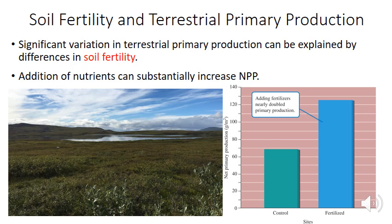Beyond temperature and moisture, nutrient availability or soil fertility has the biggest influence on terrestrial primary productivity. This was shown by Shaver and Chapin in 1986, who added fertilizer — nitrogen, phosphorus, and potassium — to plots in the Arctic tundra. Those fertilized plots showed an almost 100% increase in net primary productivity, which is surprising because plant growth in Arctic tundra might seem limited by temperature, yet nutrient addition still led to significant increases in NPP.